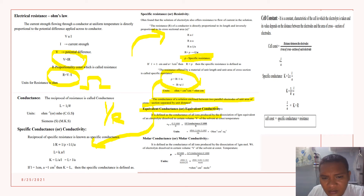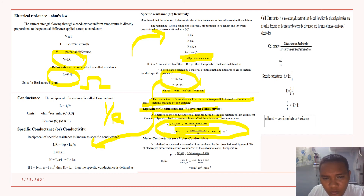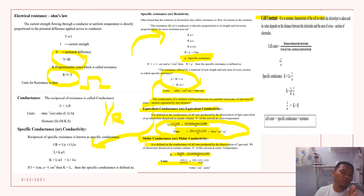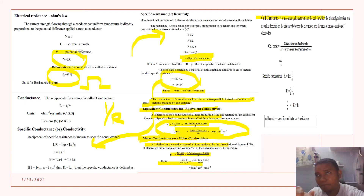We also have equivalent conductance — study this formula and substitute accordingly. Then we have cell constant. Study these, class, and I will ask everyone for an oral recitation.